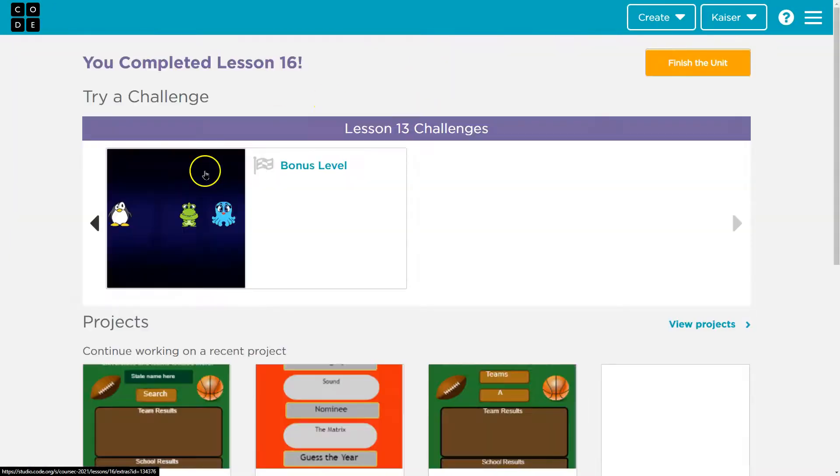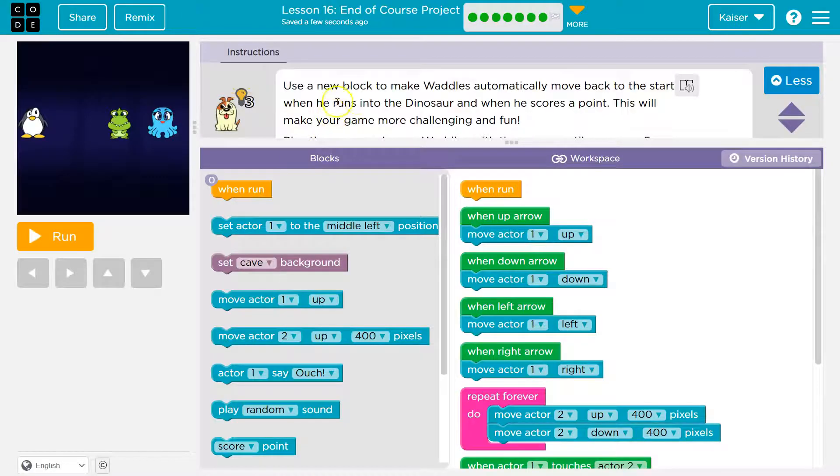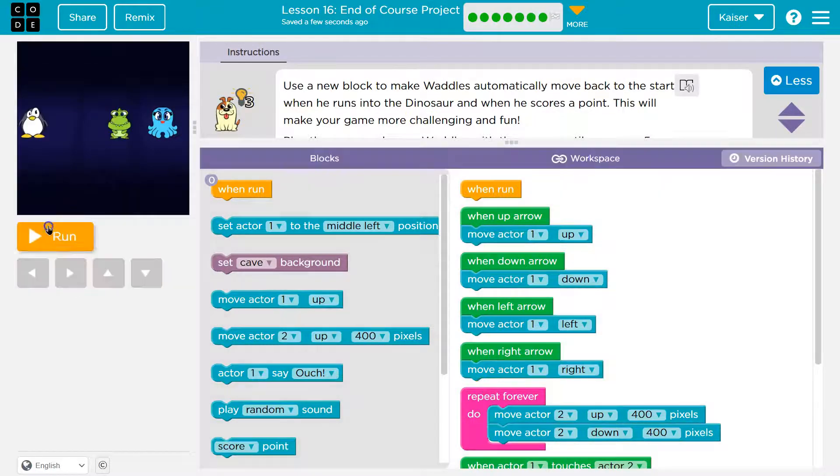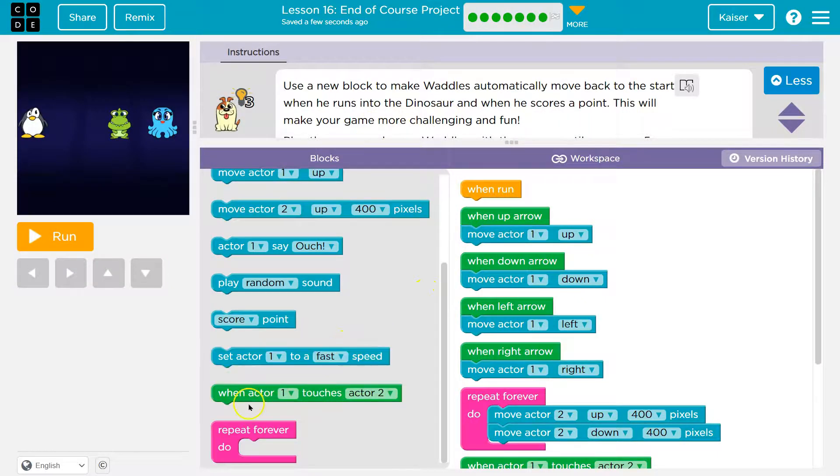I'm going to click up here. Lesson extras. Bonus level for sure. All right. Use a new block to make Waddles automatically move back to the start when he runs into the dinosaur. Oh, oh, okay. So this must be Waddles. Let's hit run and see what's going on here. Use a new block when he runs into the dinosaur. Okay.